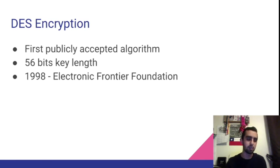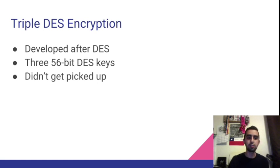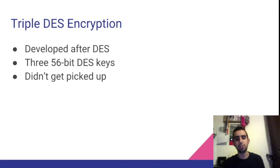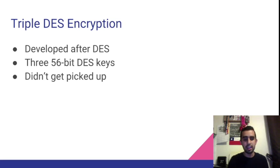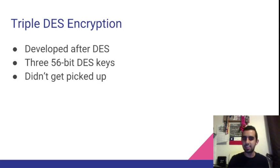Since DES encryption relied on all these keys, and now that everyone would be able to have them, they moved on to what they thought would be the next form of encryption: Triple DES encryption. What Triple DES encryption did was take the DES key, encrypt it once, encrypt it twice, and then encrypt it a third time. After encrypting it three times, that was the key and that was the data you were encrypting. Although logically you might think encrypting data three times would protect it, it didn't really get picked up.